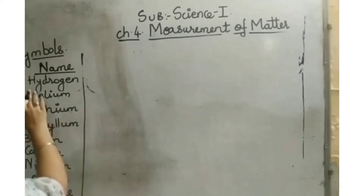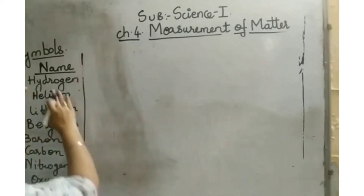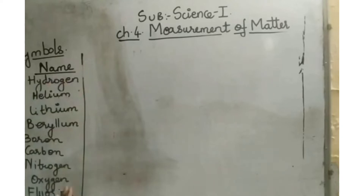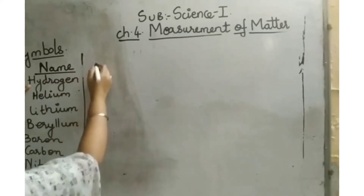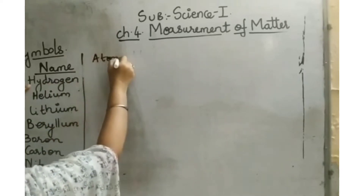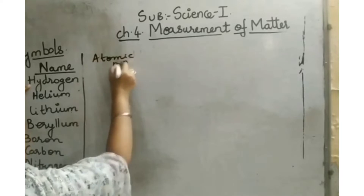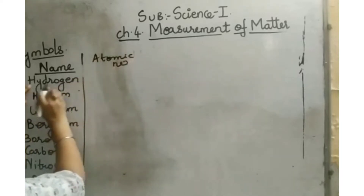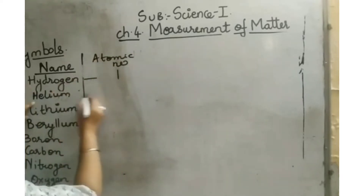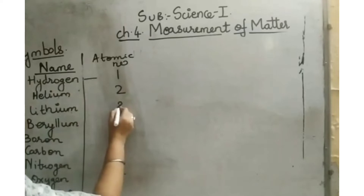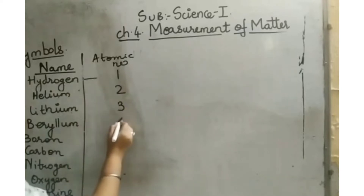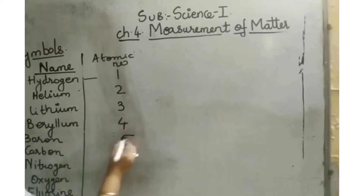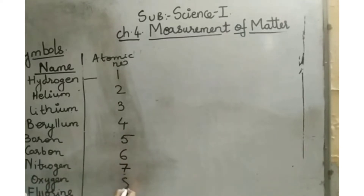Now we are going to write down the electronic configuration of all 10 elements. First, we write the atomic number: hydrogen is 1, helium is 2, lithium is 3, beryllium is 4, boron is 5, carbon is 6, nitrogen is 7, oxygen is 8, fluorine is 9, and neon is 10.